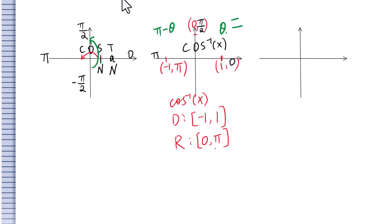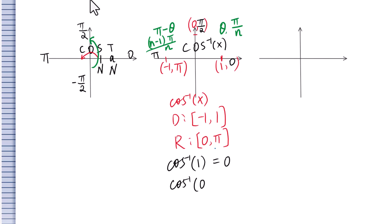If pi over n is the reference angle, then the second quadrant angle will be (n minus 1) pi over n. From this diagram: inverse cosine of 1 equals 0, inverse cosine of 0 equals pi over 2, and inverse cosine of negative 1 equals pi.